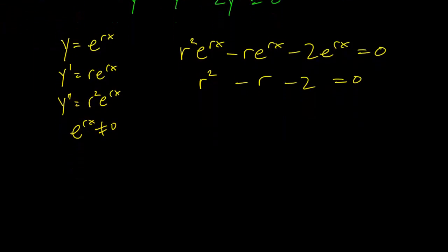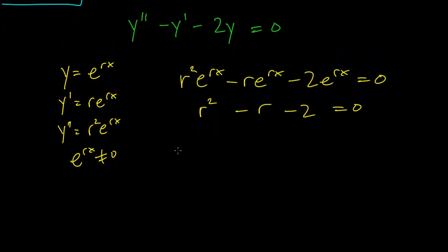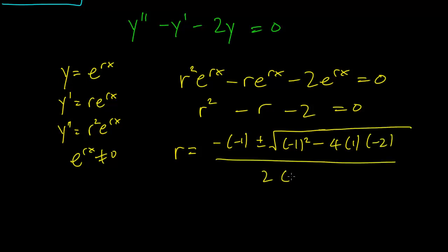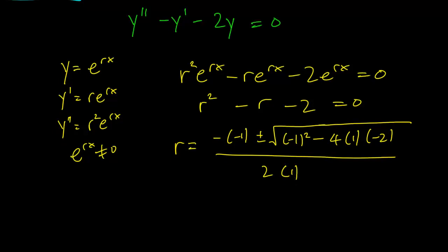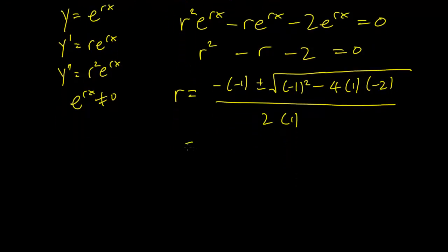So we need to solve for r. This is a simple application of the quadratic formula. r equals minus b plus or minus the square root of b squared minus 4ac over 2a. So this gives us two solutions. One is going to be 1 plus or minus square root of 1 plus 8, which is 9 over 2.